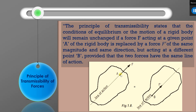On the same body, we replace force F with F' applied at point B on the same line of action. Both will result in the same condition — the equilibrium remains unchanged whether we apply force F or F' of the same magnitude at point A or B on the same body. This is the principle of transmissibility of forces, which is a very important criterion in the equilibrium condition of a body.